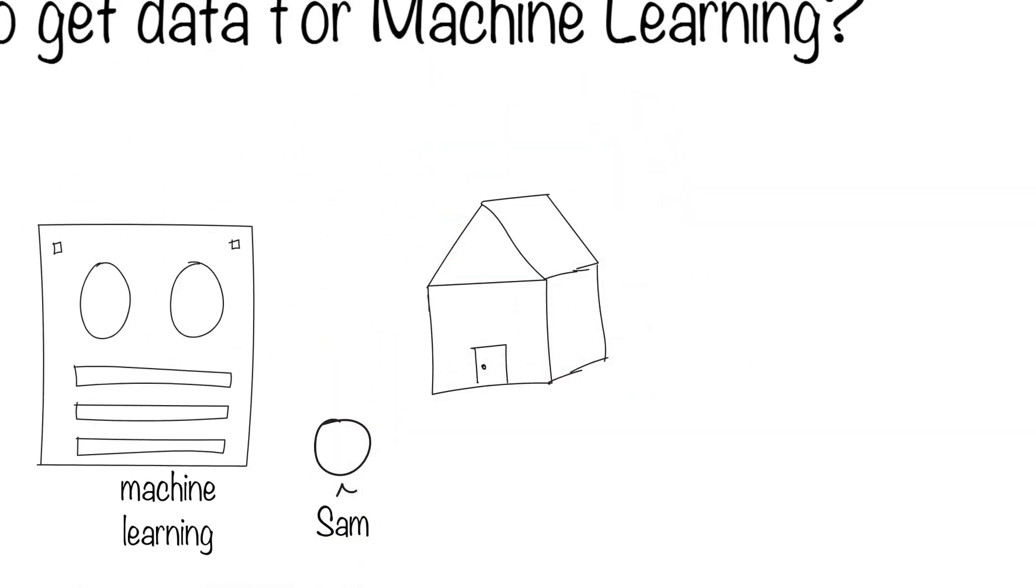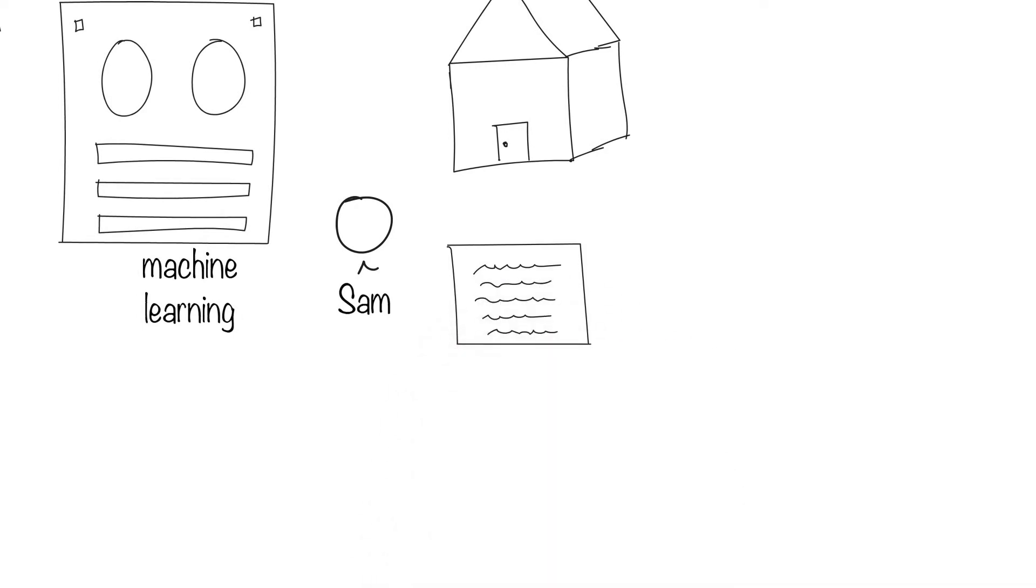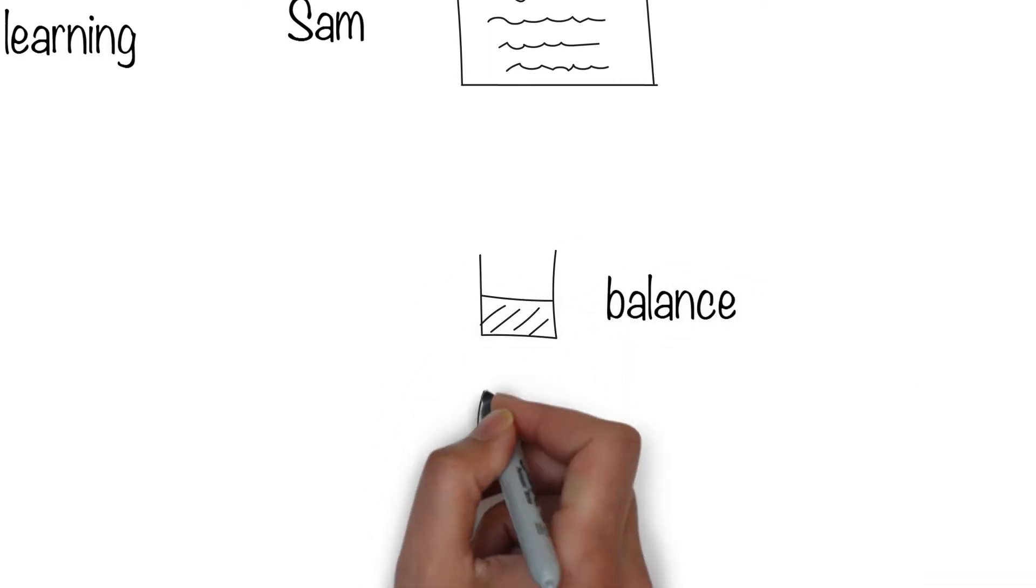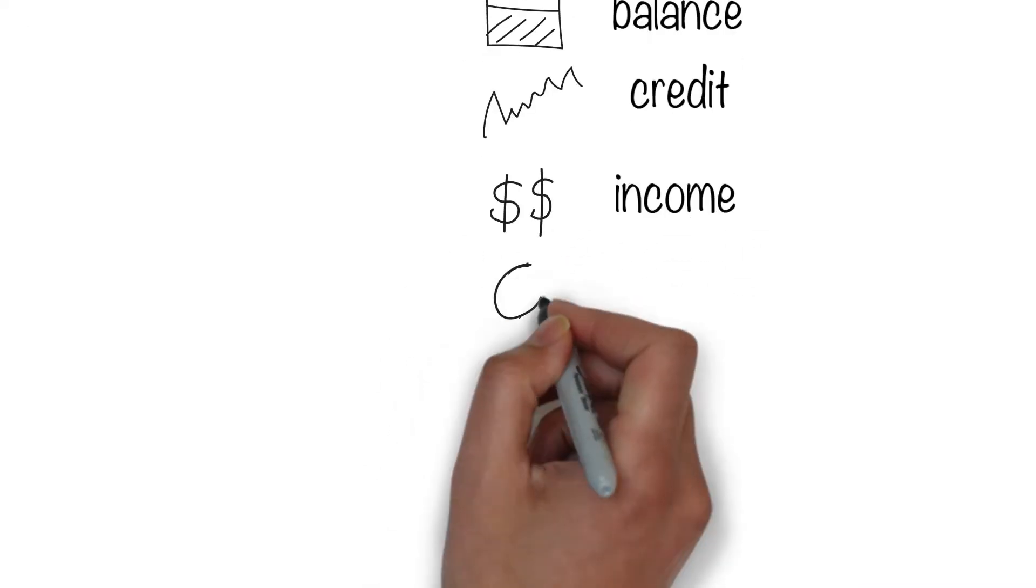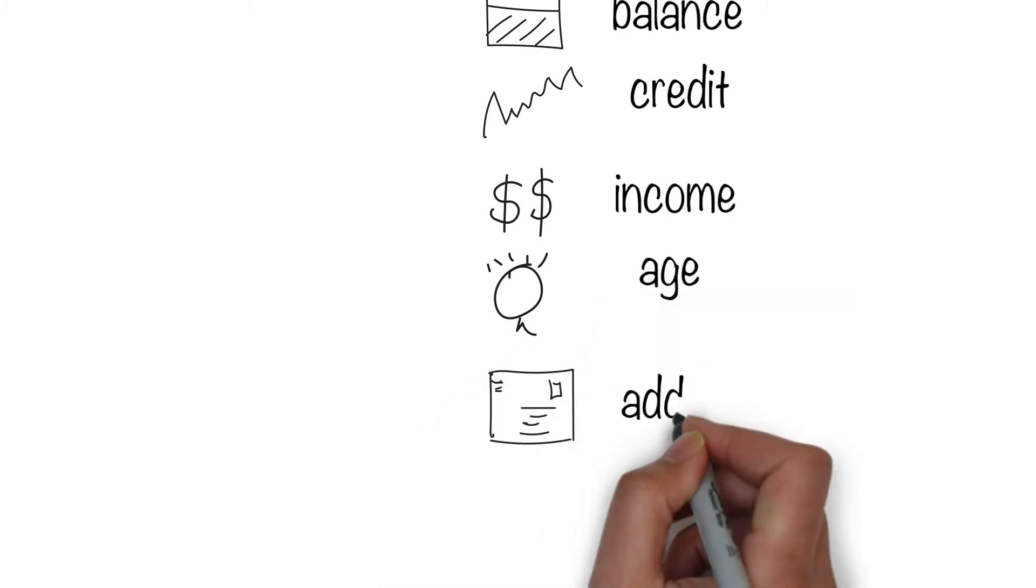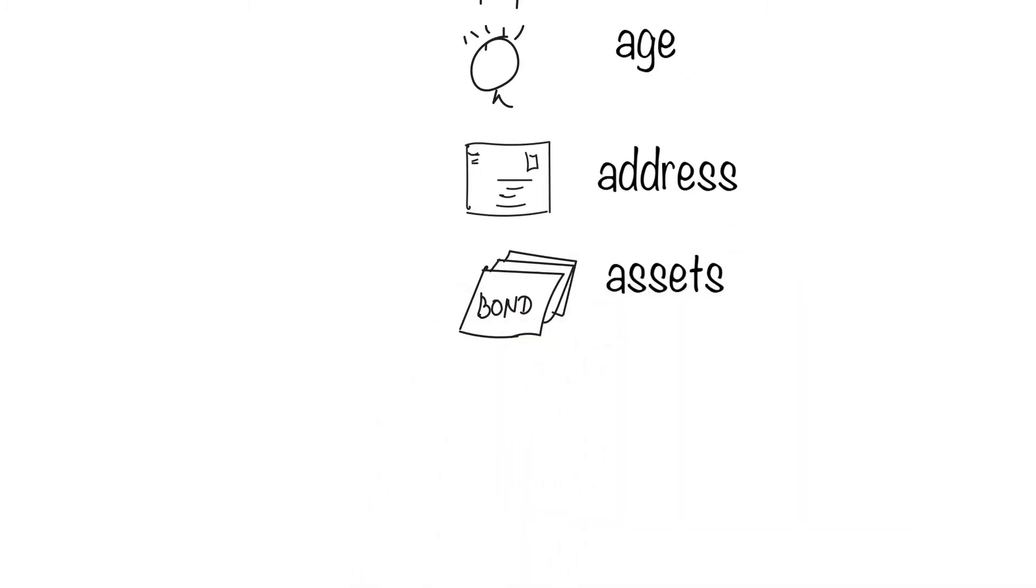Let's take this example. Sam is ready to buy a house, so he fills out an application for a home loan. The bank collects information from Sam, like his bank balance, his credit history, his monthly income, his age, his address, his assets, and so on.